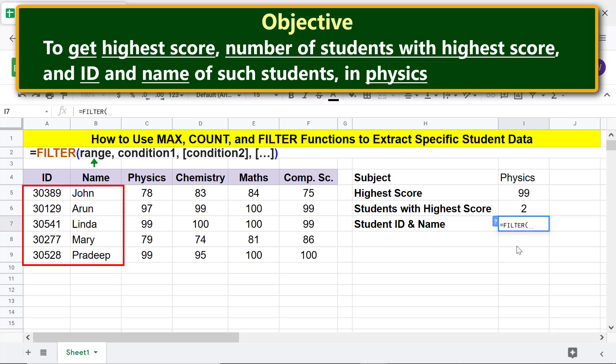Type comma. For condition 1, as before, select this range and type equals MAX. Select MAX and select this range again.